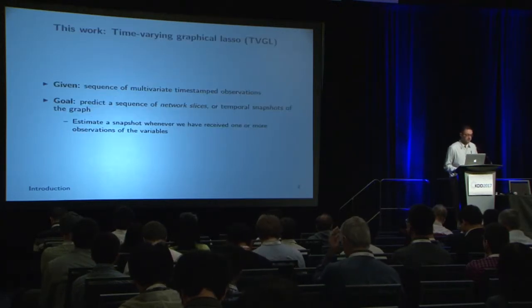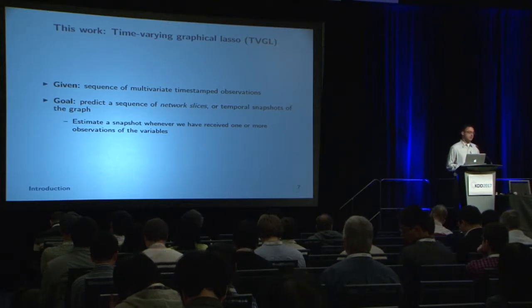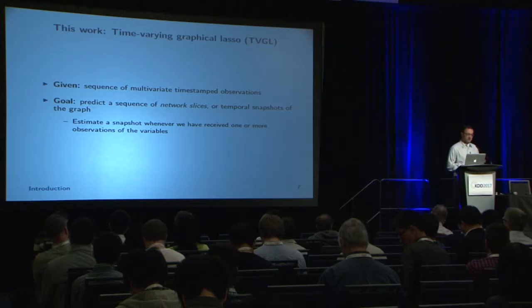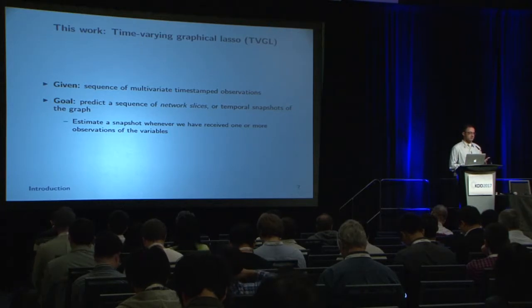This is where our work comes in. Our method is called the time-varying graphical lasso, or TVGL. It takes in a sequence of timestamped observations — sensor data from anything like an automobile to the stock market — and predicts a sequence of network slices, temporal snapshots of the graph, showing the estimated correlation structure between sensors at each specific point in time.